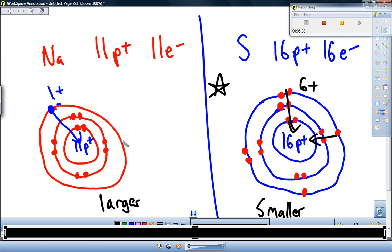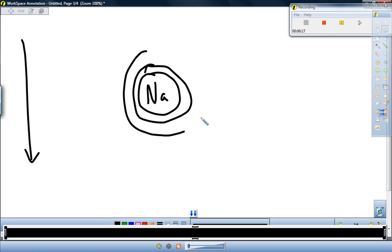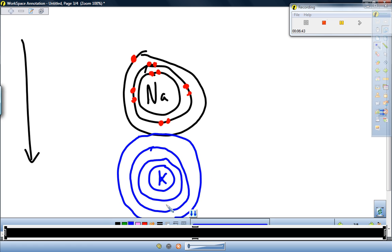All right. So that is the trend in the same period, the same horizontal row on the table. When we look at family members, when we look at the same group, so if we're in the same group, the same vertical column, let's take a look at sodium. Once again, sodium. 11 electrons. So 2, 8, 1. Compare that to its family member potassium. Potassium is the one below it on the periodic table. They're both going to have one valence electron, right? We talked about things in group 1 have one valence electron. And so potassium has 1s2, 2s2, 2p6, 3s2, 3p6, 4s1.